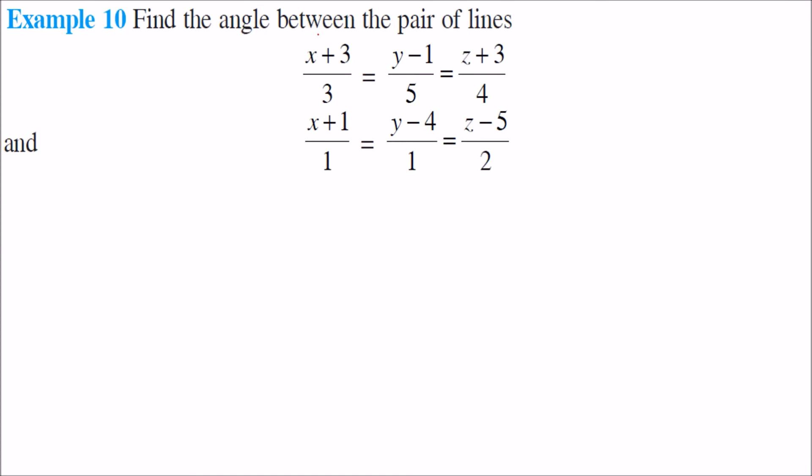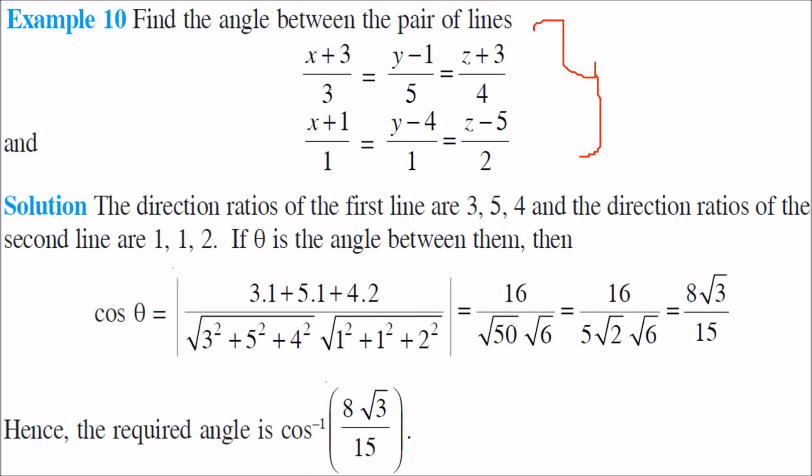To find the angle between a pair of lines when the Cartesian form is given, we take the direction ratios 3, 5, 4 and 1, 1, 2. We can directly use a1a2, b1b2, c1c2, divided by the sum of squares of each set, and find that this equals cos inverse 8 root 3 by 15.